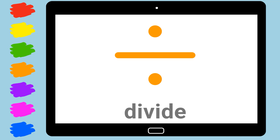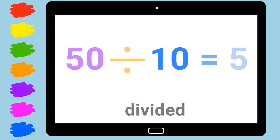Divide. Fifty divided by ten equals five.